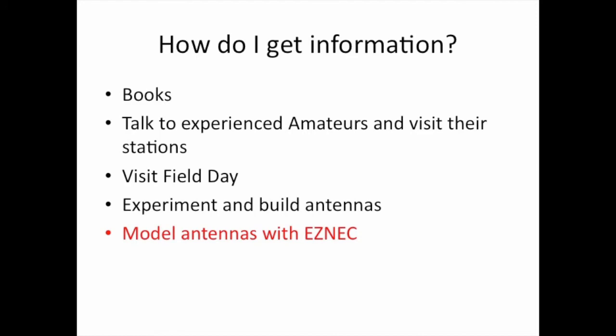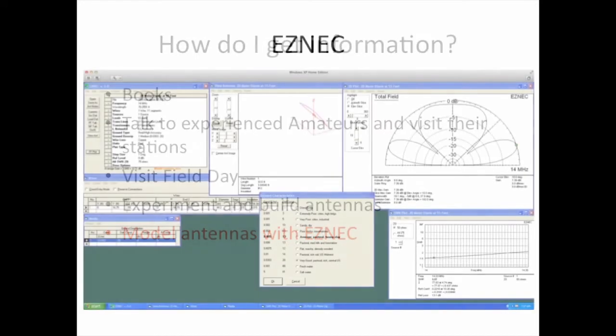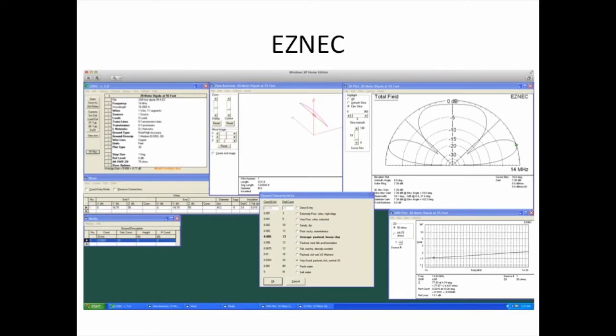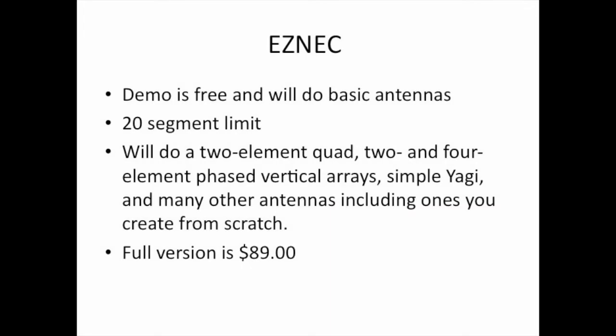You can model antennas with EZnec before or after you build them. EZnec is a free antenna program — it's a little limited in the free version, but quite usable. You can't model a big elaborate antenna with the free version, but you can do dipoles, Yagis, and inverted-Vs. The demo is free and will do a two-element quad. The full version is well worth it at $89 if you're going to do a lot of antenna modeling.